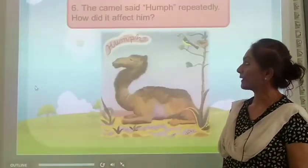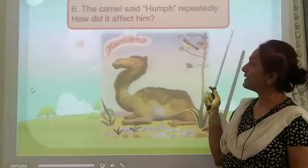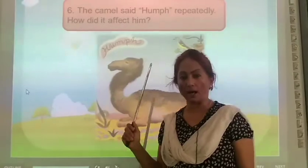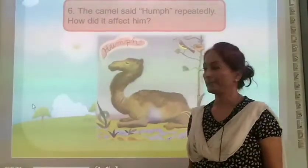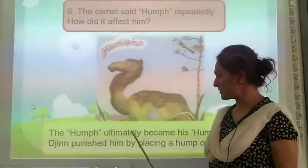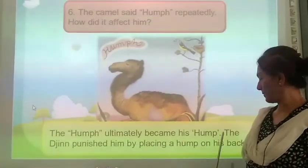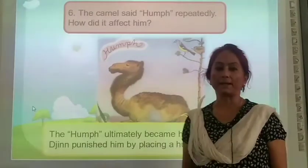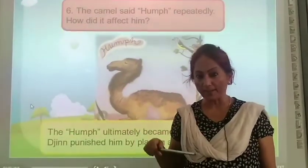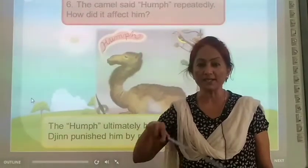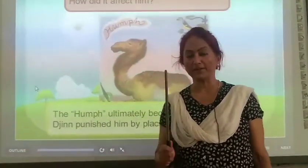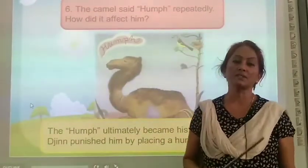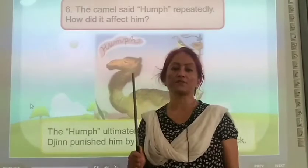The camel said 'hum' repeatedly. How did it affect him? The hum ultimately became his hump. The jinn punished him by placing a hump on his back. He developed a hump on his back as punishment given to him by the jinn, because he did not do any work — he was idle.